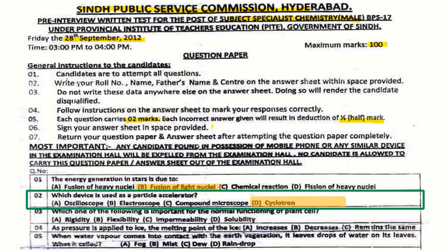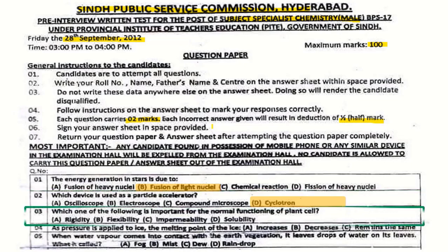Question number 3: Which one of the following is important for the normal functioning of a plant cell? The correct answer is solubility.